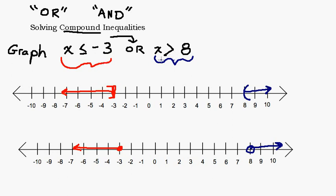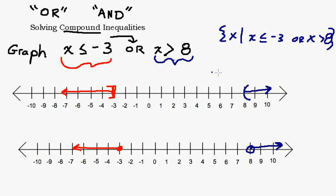Since x can be less than or equal to negative 3 or greater than 8, this graph represents the entire solution — everything less than or equal to negative 3 and everything greater than 8 is included. Something to remember is set builder notation. For this solution, we would say: the set of all x such that x is less than or equal to negative 3 or x is greater than 8. We'll be doing more advanced ones in a minute where the answer looks like this but the problem didn't start that way.